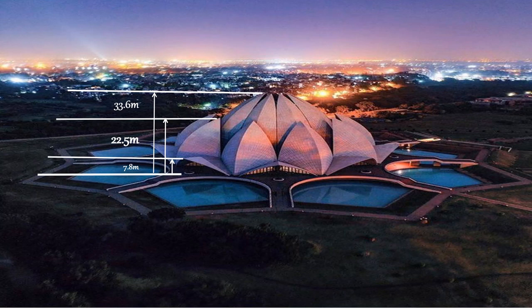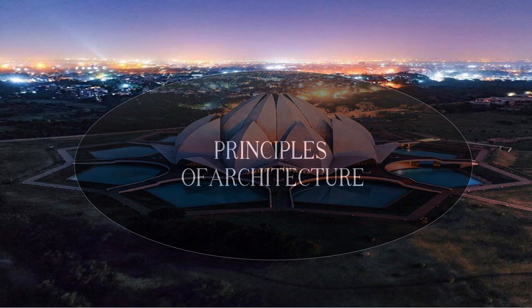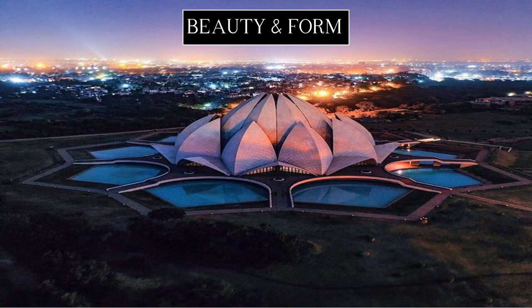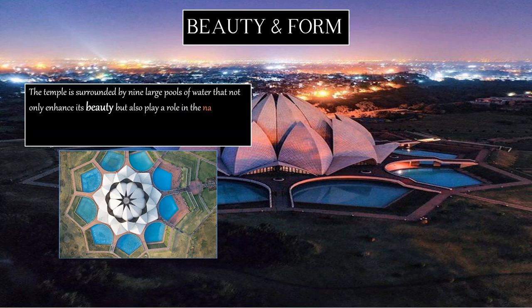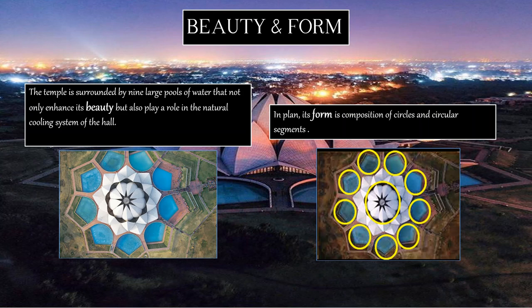This lotus is surrounded by nine symmetrical pools and a bridge to reach inside, just like a natural lotus. Important factors considered in designing the structure fall under principles of architecture. The first is beauty and form — the temple is surrounded by nine large pools of water that not only enhance its beauty but also play a role in the natural cooling system of the hall. In plan, its form is a composition of circles and circular segments.